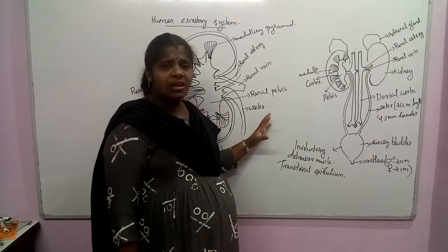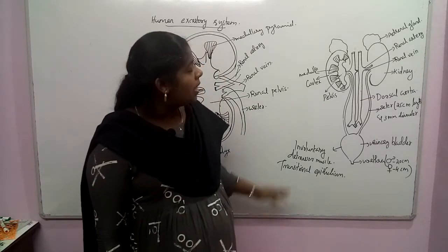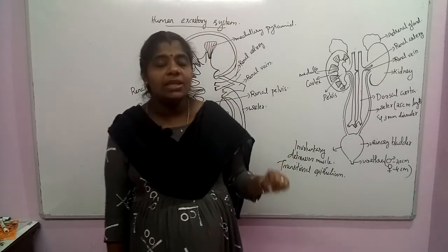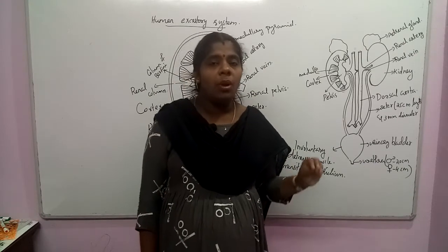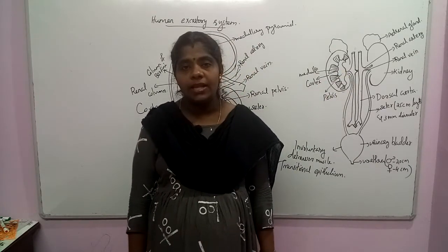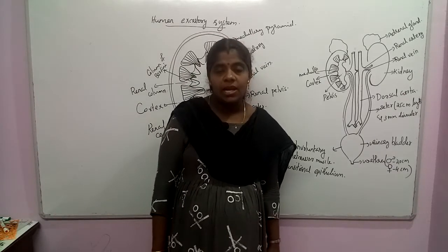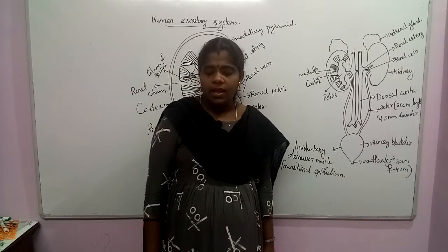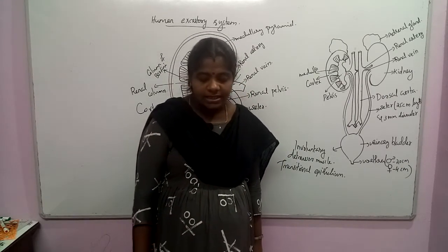This is all about the excretory system in humans. In one kidney, we have around 1 million excretory units. The structural and functional unit of the kidney is the nephron. Filtration of blood and removal of nitrogenous waste occurs in the nephron. We will see the nephron in the next session.